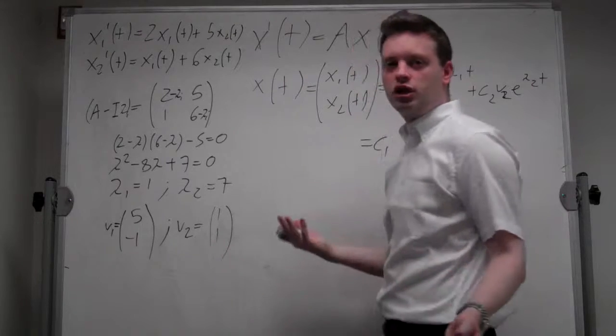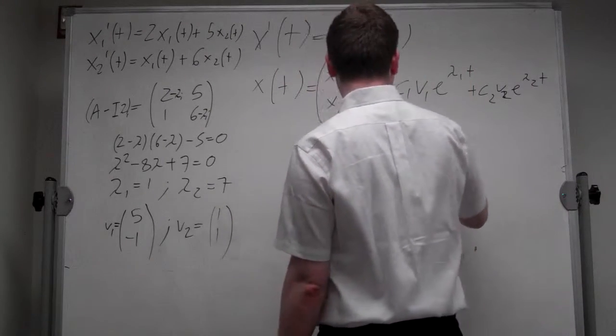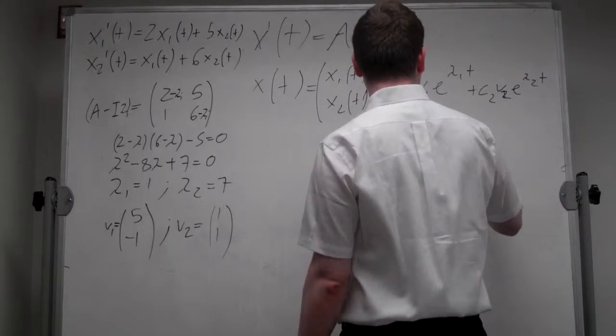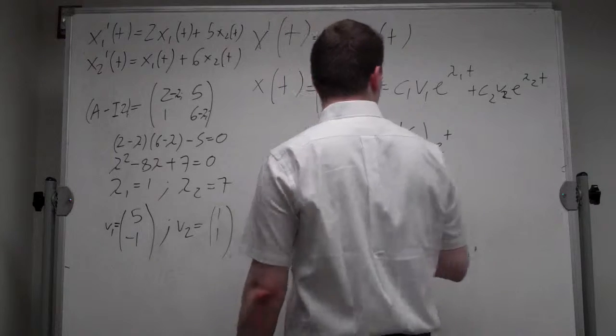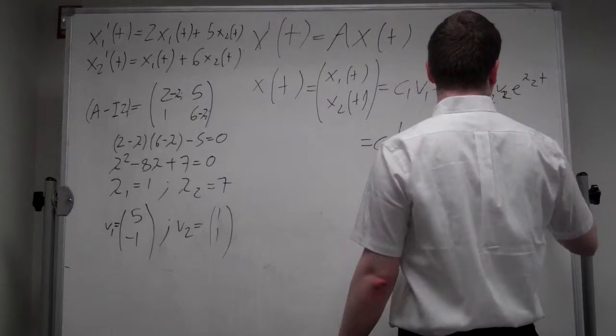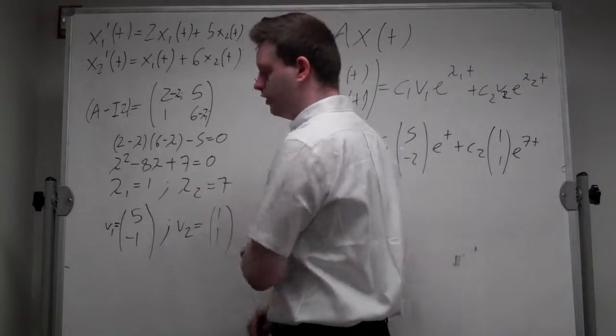c1, because we don't know the constant, we don't have an initial condition yet, c1 times the first eigenvector, which is 5, minus 1, times e to the t, because the eigenvalue is 1, plus c2 times the second eigenvector 1, 1, times e to the 7t, because the second eigenvalue is 7.